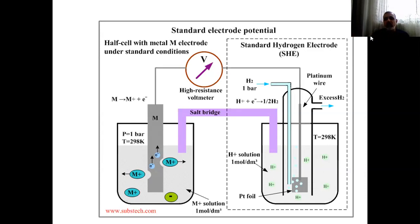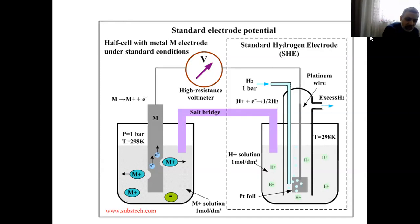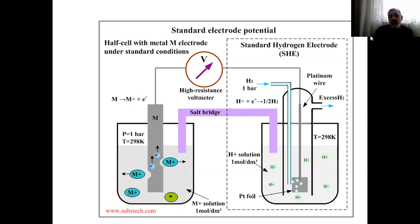Either hydrogen is more noble than the metal present in the left-hand side compartment, or the left-hand side compartment is more noble than hydrogen. So we get the difference in voltage. Using this voltage, we can calculate whether this metal is a precious metal, an active metal, or a semi-noble metal. For example, copper is considered to be a semi-noble metal.